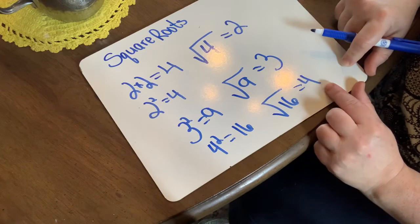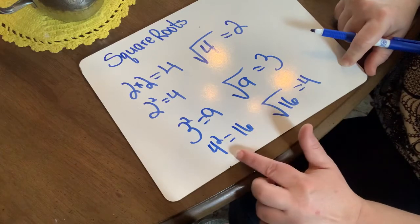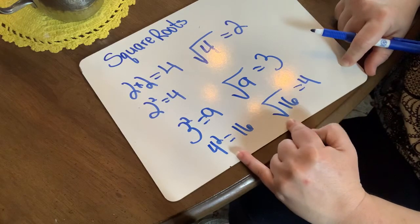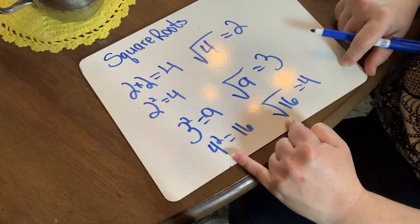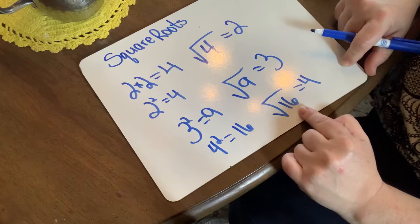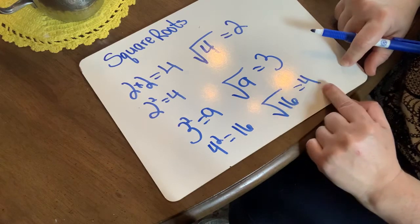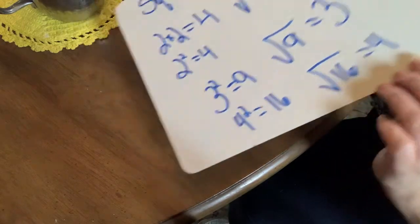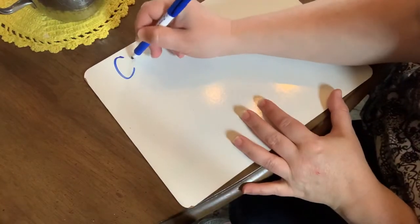There are other factors of 16, like 2 times 8, but I need the factors that are the same number. Basically, taking the square root of something is the opposite operation of exponents. If I square 4 I get 16; the opposite operation is taking the square root of 16 and I get 4. So now we're going to talk about cubed roots.